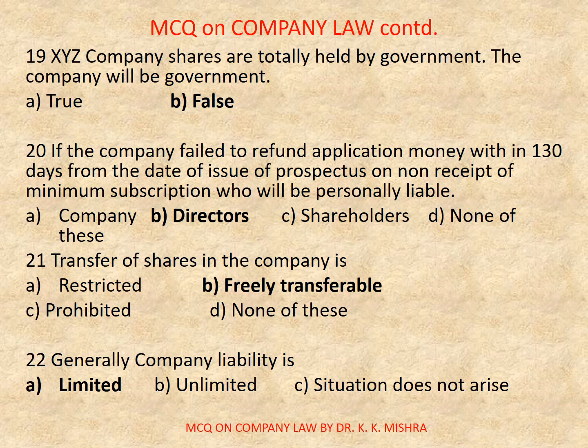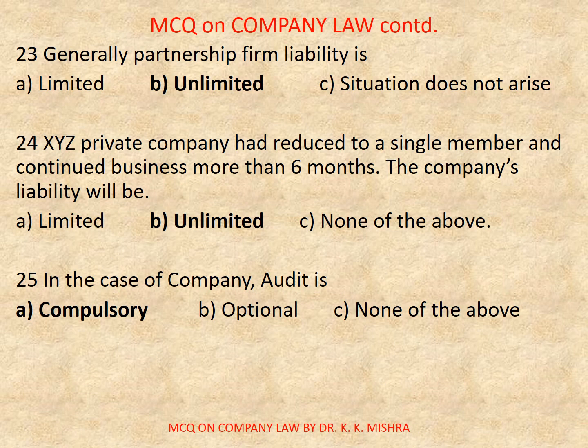Question number 22: Generally, company liability is — Options are: A) Limited, B) Unlimited, C) Situation does not arise. Correct option is A, Limited. Note: the correct options are highlighted here; in case of any discrepancy that will be corrected. This video tutorial is based on Companies Act 1956.